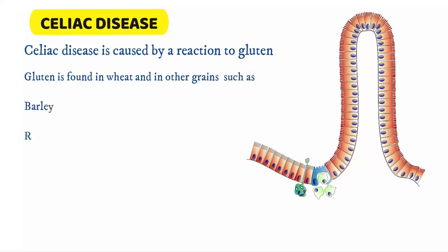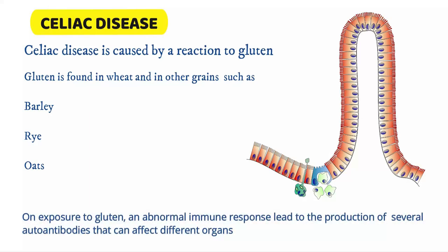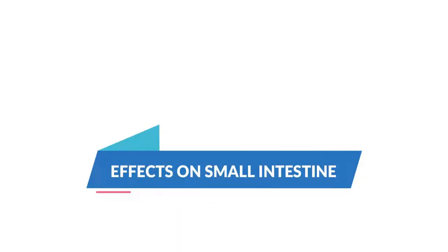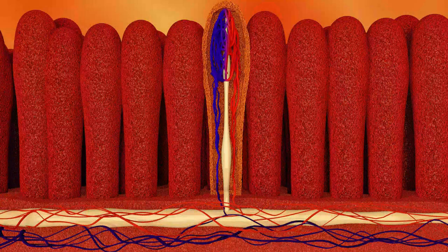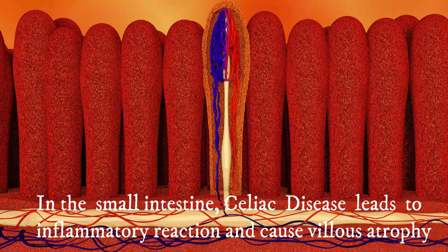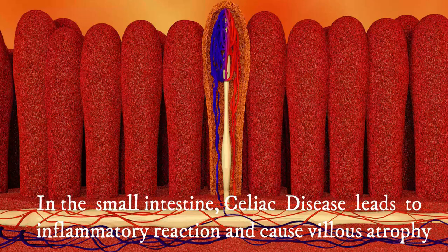Celiac disease is caused by a reaction to gluten, which is found in wheat and in other grains such as barley, rye, and oats. On exposure to gluten, an abnormal immune response leads to the production of several autoantibodies that can affect different organs. In the small intestine, this leads to an inflammatory reaction and causes villus atrophy, ultimately affecting the absorption of nutrients and frequently causing anemia.